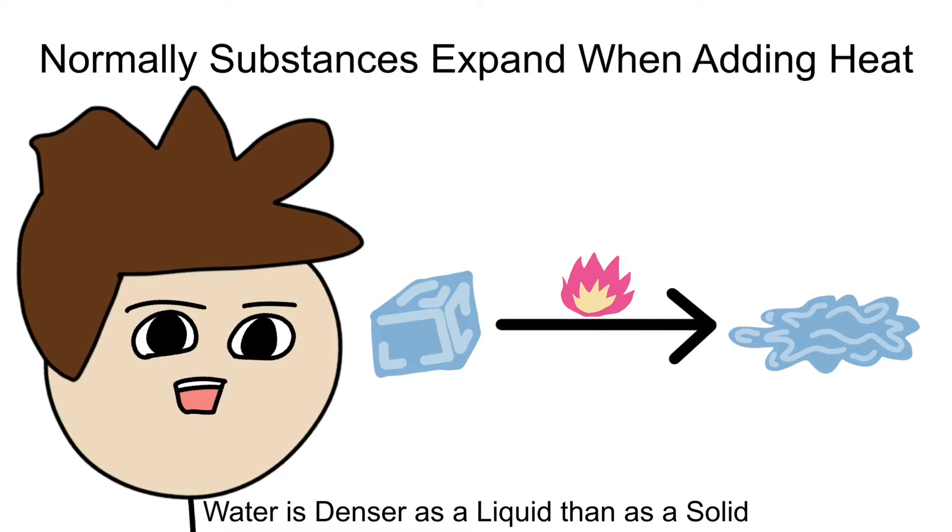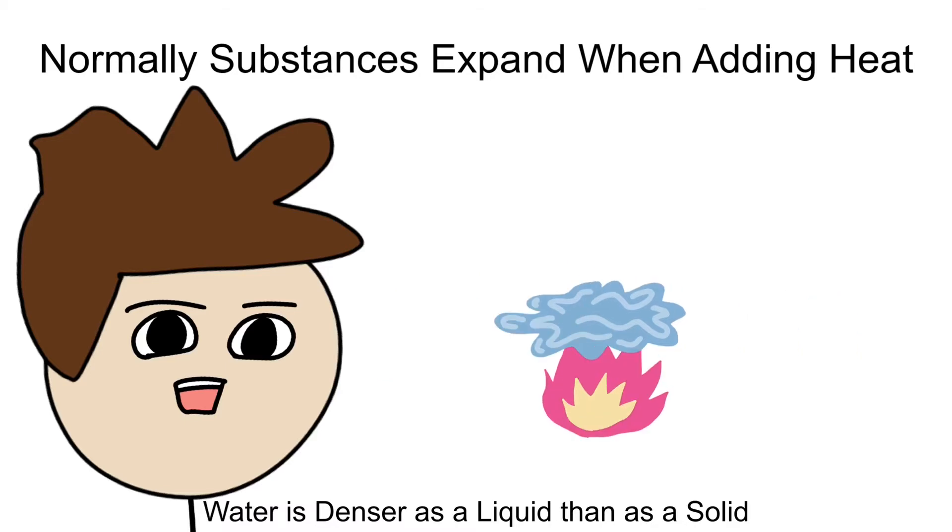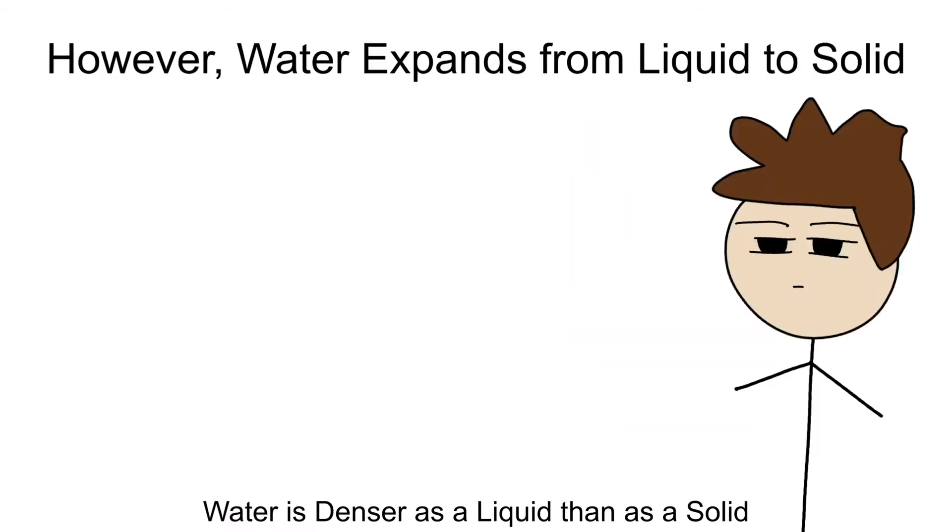The frozen substance begins to break apart and turn to liquid. If you add even more heat, there's a good chance that that liquid becomes gas and then you really start to see expansion. But with water, this isn't the case. When it transitions from liquid to ice or ice to liquid, it's quite the opposite.